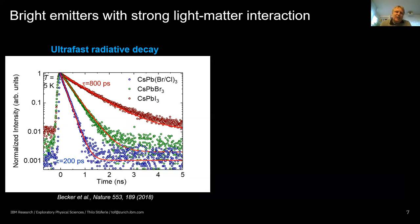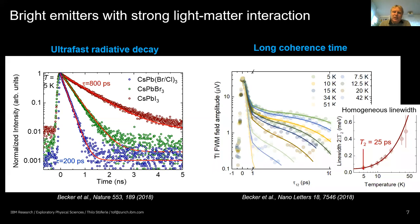What makes these materials especially special is their extremely fast radiative decay — below one nanosecond for several compounds. Compared to organics, which typically have several nanoseconds at low temperature with 100% quantum yield, these materials go well below a nanosecond, with purely radiative and beautifully single-exponential decay. Another important property is their very long coherence time T2, found through four-wave mixing experiments to be on the order of tens of picoseconds. Some groups using single-dot spectroscopy have reported T2 times up to 70–80 picoseconds.